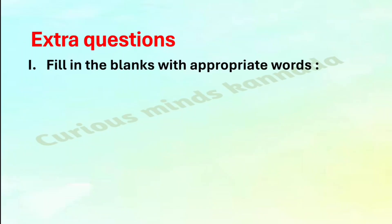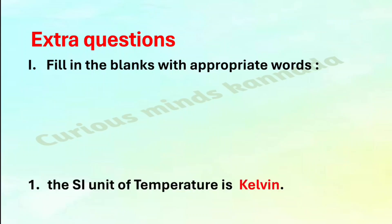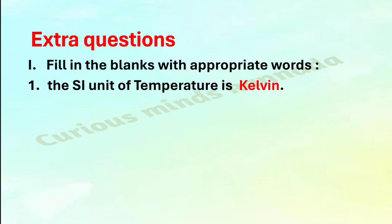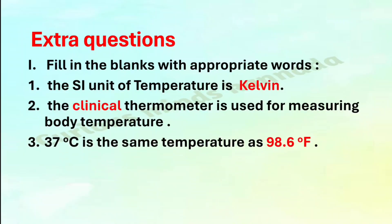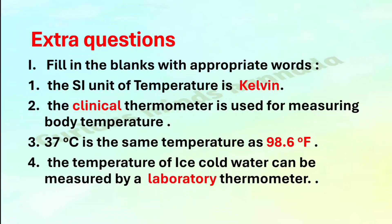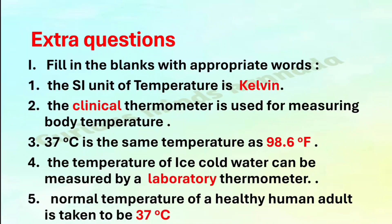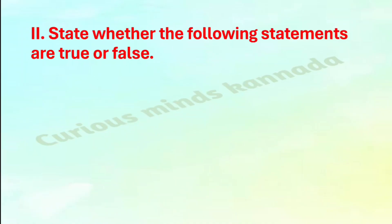Extra questions — Fill in the blanks: First, the SI unit of temperature is — answer: Kelvin. Second, the — thermometer is used for measuring body temperature; answer: clinical. Third, 37 degree Celsius is the same temperature as — answer: 98.6 degree Fahrenheit. Fourth, the temperature of ice cold water can be measured by a — thermometer; answer: laboratory. Fifth, normal temperature of a healthy human adult is — answer: 37 degrees Celsius.